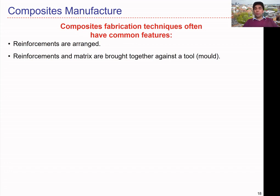Another common feature is that reinforcements and matrix are both brought together against a tool — what we call the mold. The mold is the device created to the shape of the component we need to manufacture. We can lay the reinforcements and then inject the resin in liquid form, or compress the material into the mold to create the desired shape.